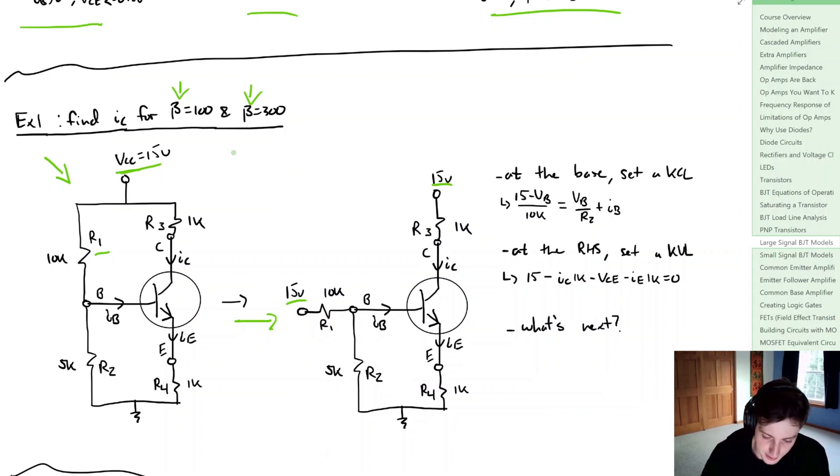If we do a KCL at the base right here, we simply say that 15 minus VB, that's going to be the current going in, that's going to be set equal to the current going out. So we could say that that's VB divided by R2 and then whatever the base current is. So we arrive at this equation right here.